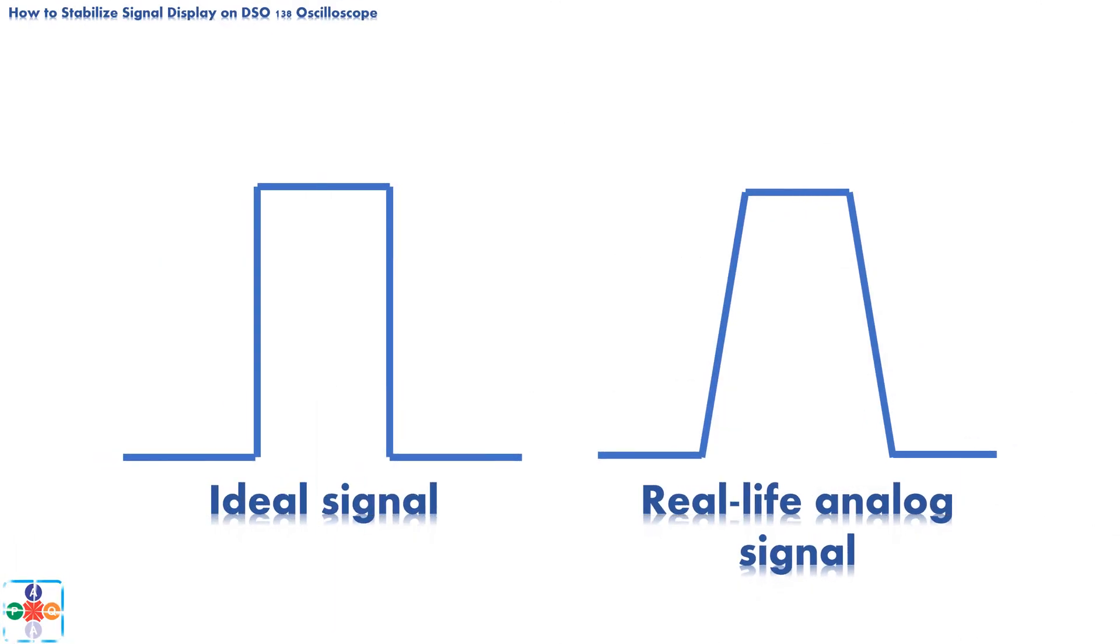Let's compare two signals side by side. On the left-hand side, we have our ideal square signal. On the right-hand side, we have a real-life analog square signal. At first glance, the difference is obvious. The real-life signal looks more like a trapezoid than a rectangle.